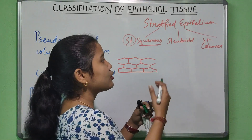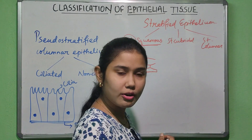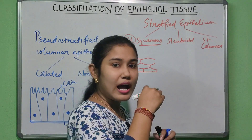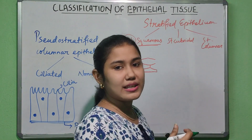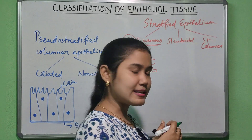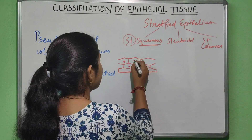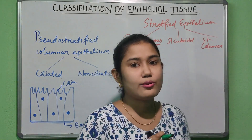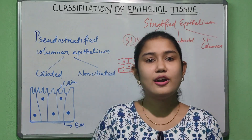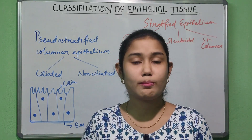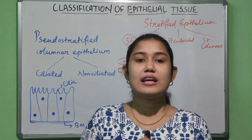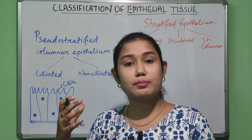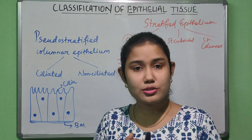In the deep layers, the cells may be cuboidal or columnar in shape. When surface cells degenerate, they are replaced by the basal layer. This stratified squamous epithelium is found on the surface of the skin and also on wet surfaces like the mouth, esophagus, tongue, part of the pharynx, and part of the vagina.